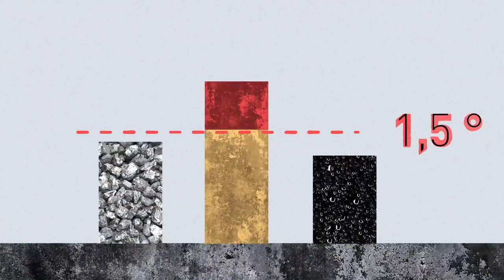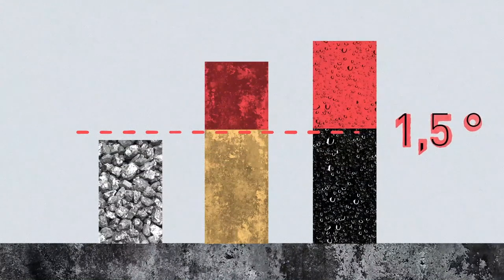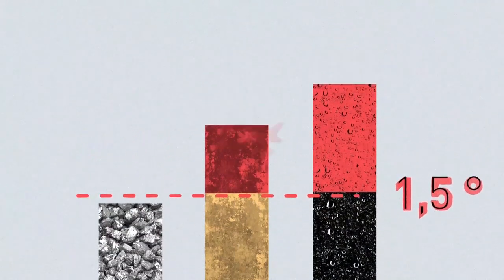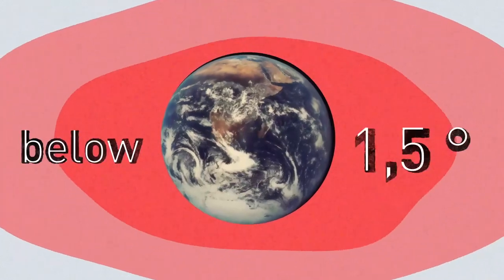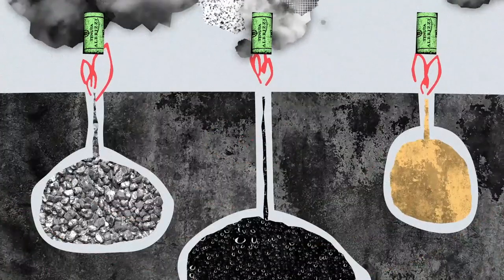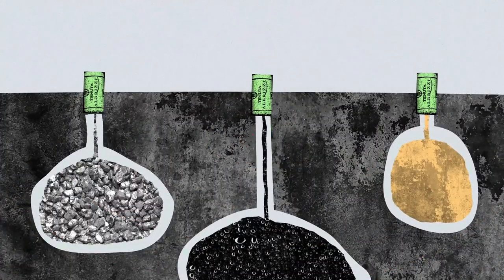We are beyond the point where we can phase out one fossil fuel at a time. If we want to keep global warming below 1.5 degrees Celsius, we need a managed decline of fossil fuel production.